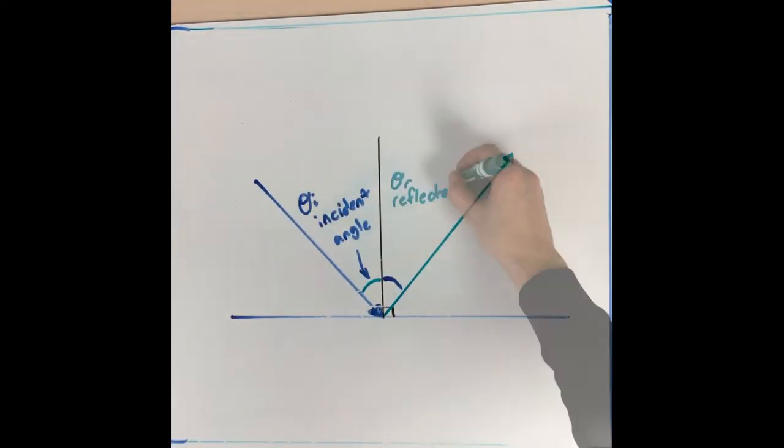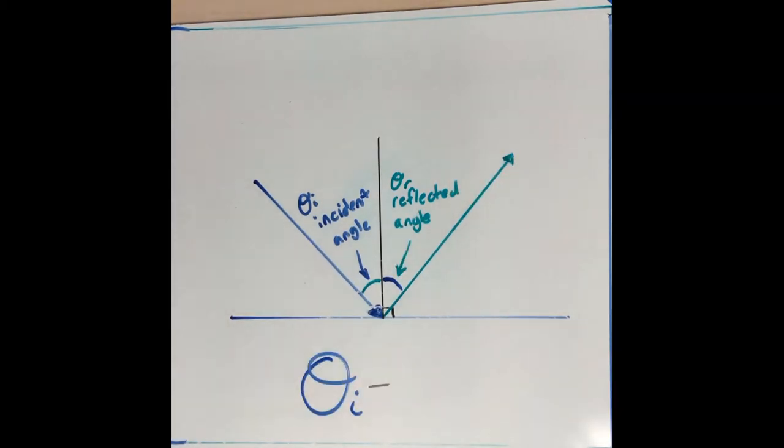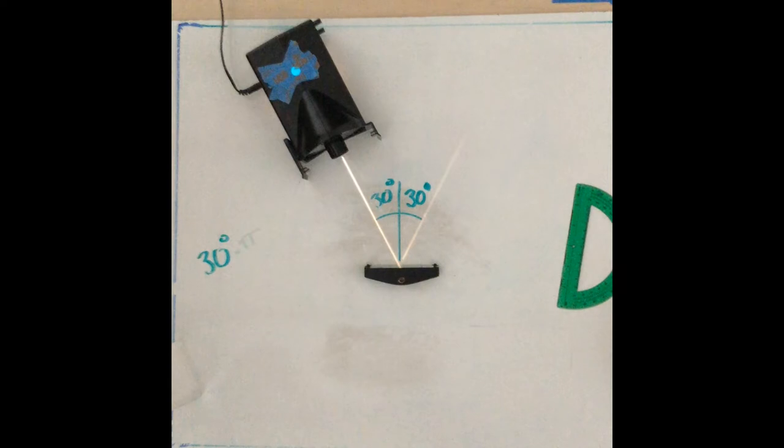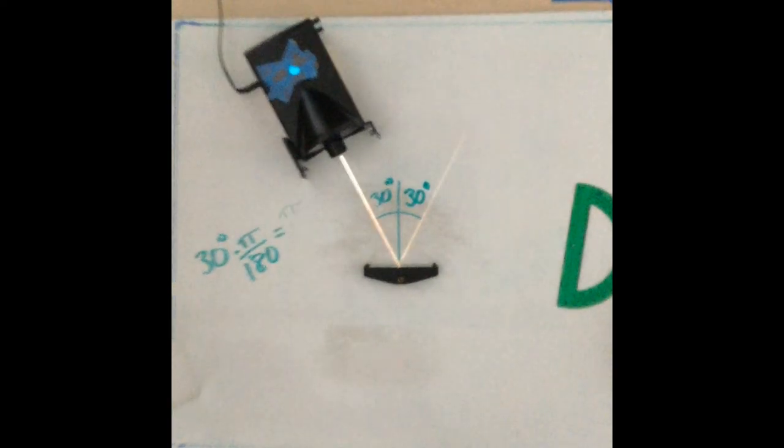For example, this light ray incident on a plane mirror with incident angle 45 degrees from the normal is reflected off of the mirror at 45 degrees from the normal, or pi over four radians.